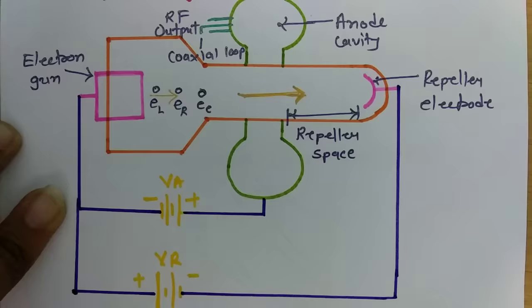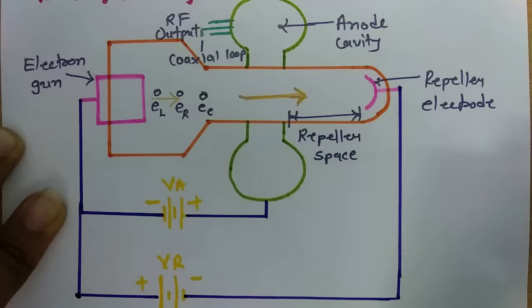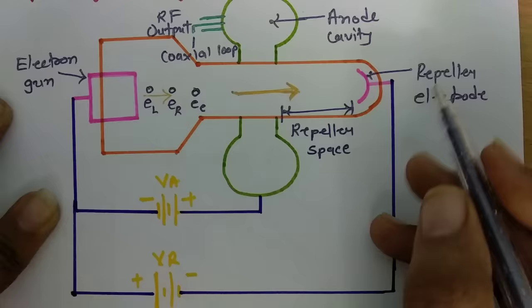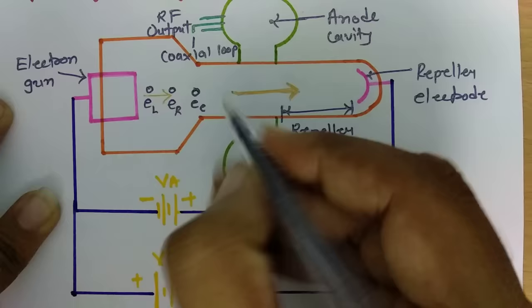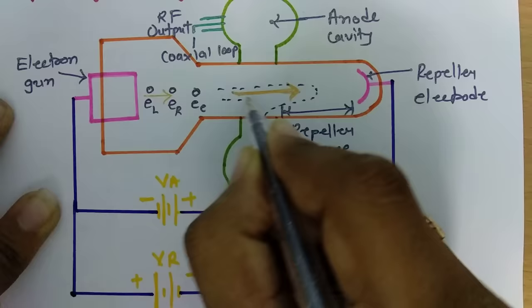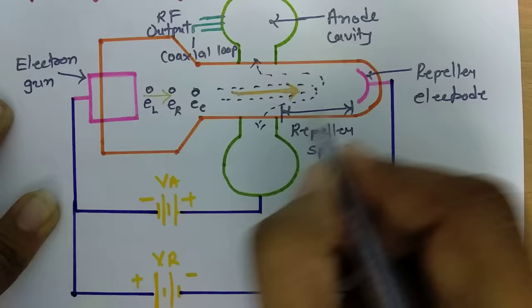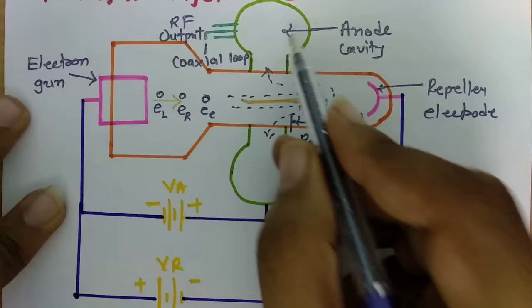Those electrons which move further into the repeller space will get repelled by the repeller electrode, because we are connecting the negative terminal of the repeller voltage to the repeller electrode. Electrons carry negative charge, so a negative potential at the repeller electrode creates a repulsive force. These electrons then bounce back from the repeller and move back into the anode cavity.